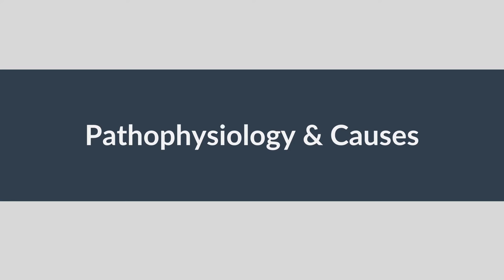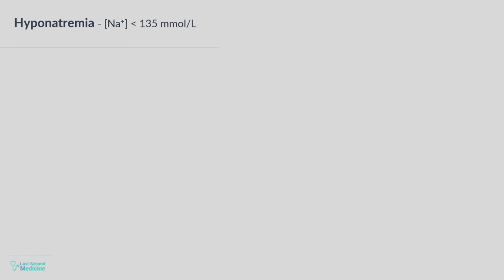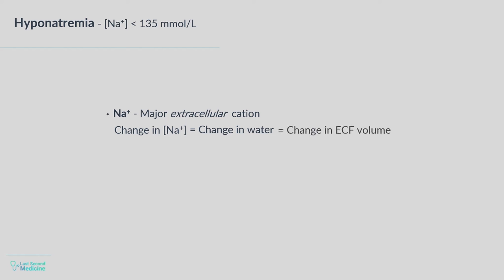From physiology basics, we know that sodium is the major extracellular cation. Changes in serum sodium are always accompanied by alteration in water, and thus volume status. Since sodium is an extracellular cation, by volume status we mean mainly extracellular volume. When we encounter hyponatremia, fundamentally there is greater retention of water relative to sodium, and the resultant serum osmolality will be low.